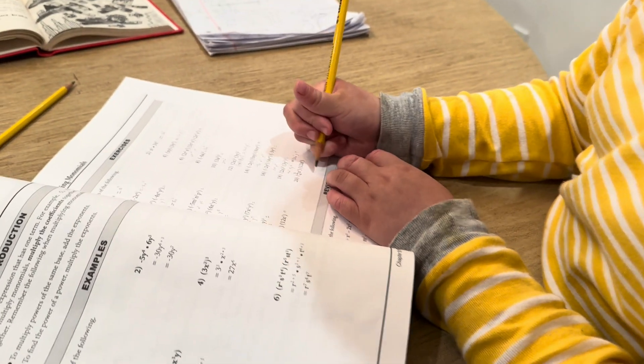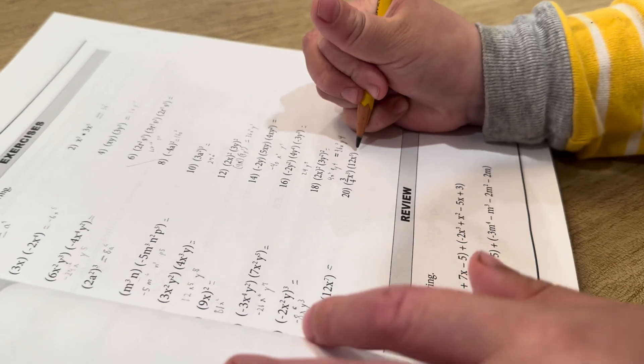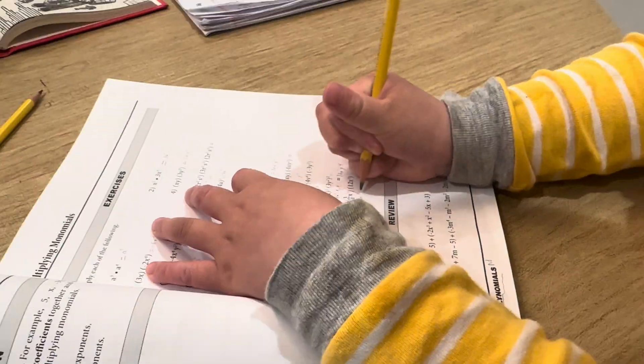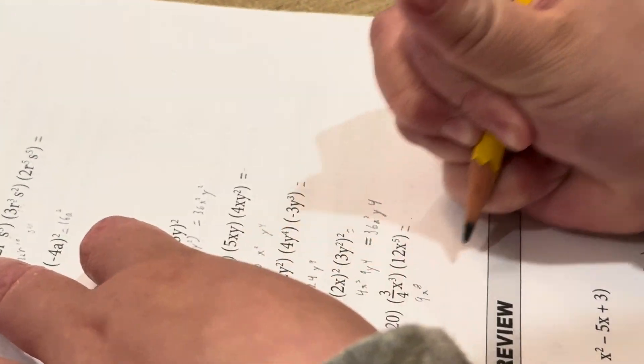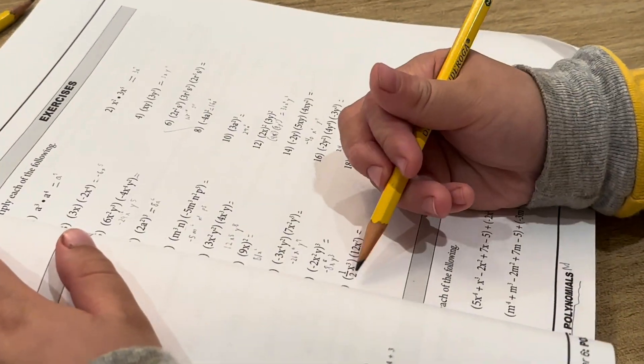Three fourths x cubed, 12 x to the fifth equals 9 x to the eighth. Problem 19.